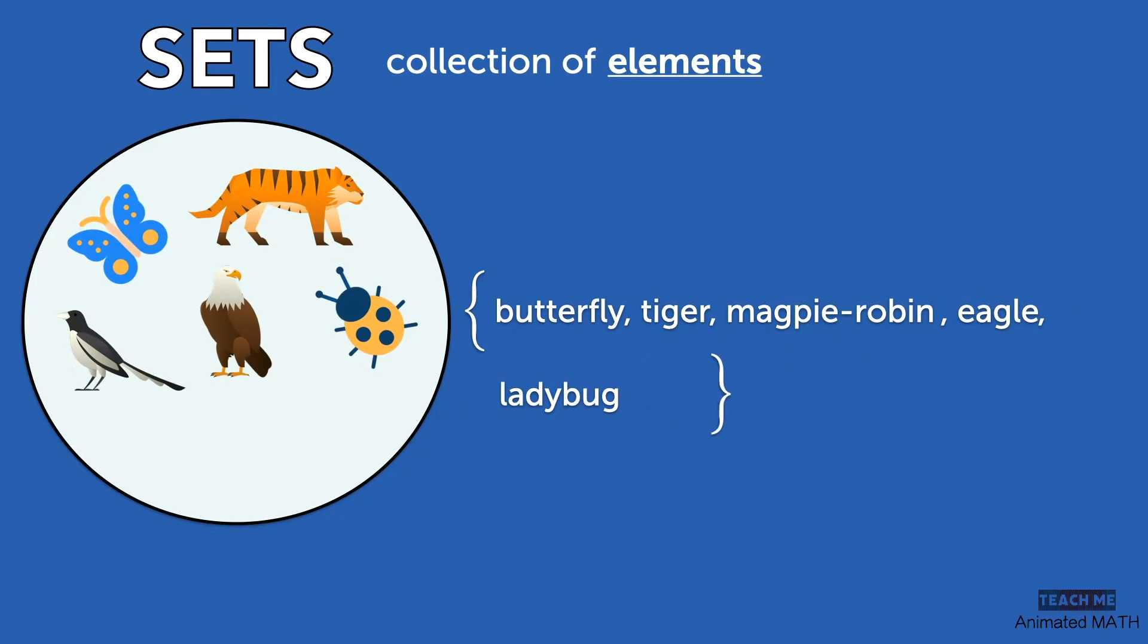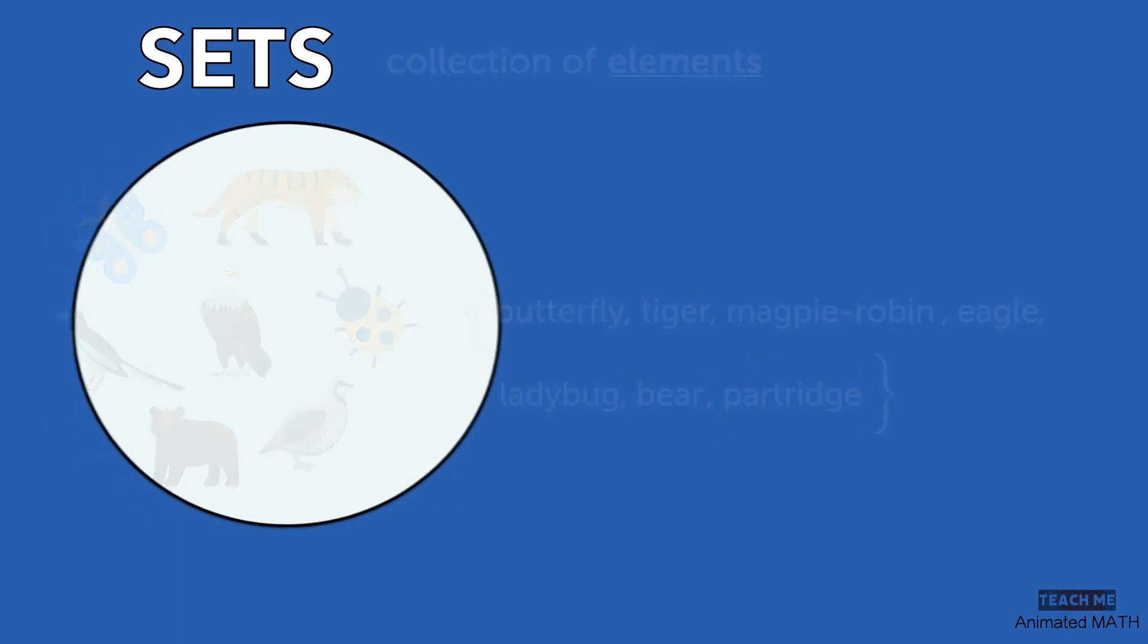This way of writing a set by listing the elements is called the roster method.